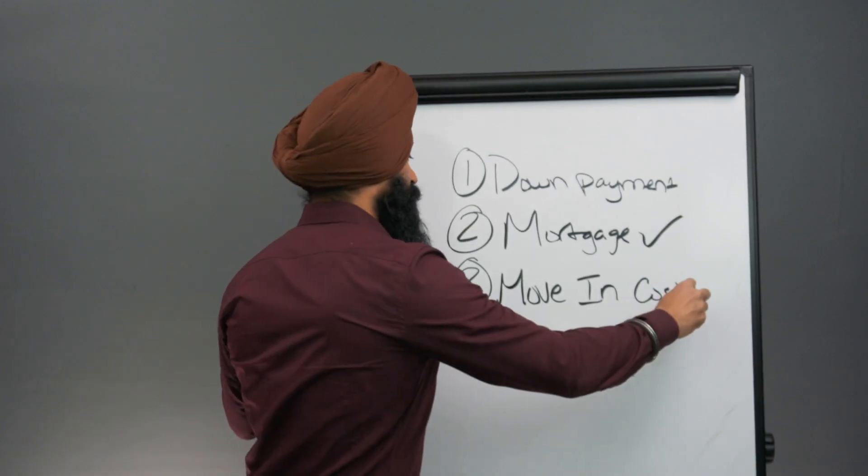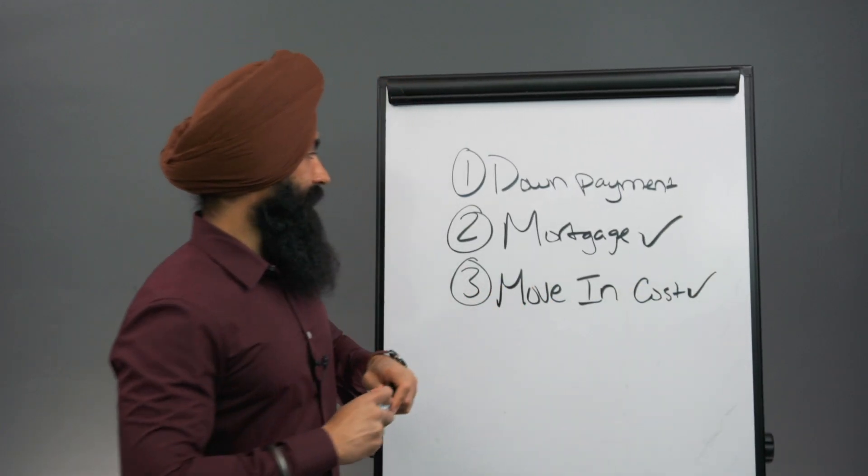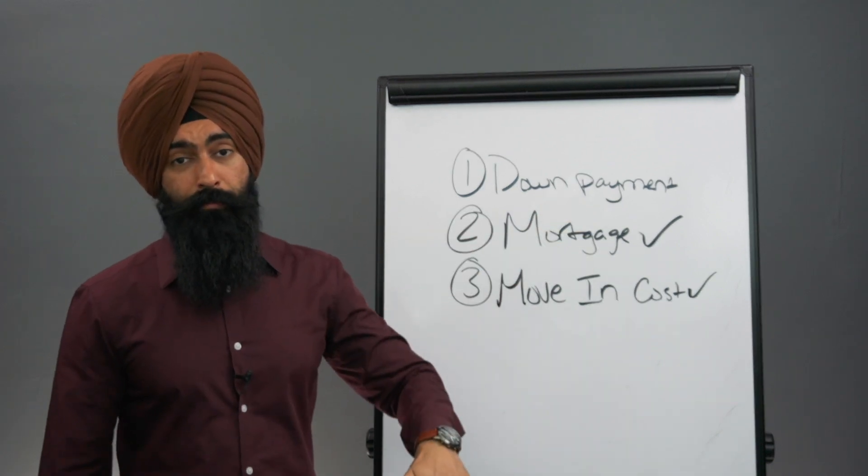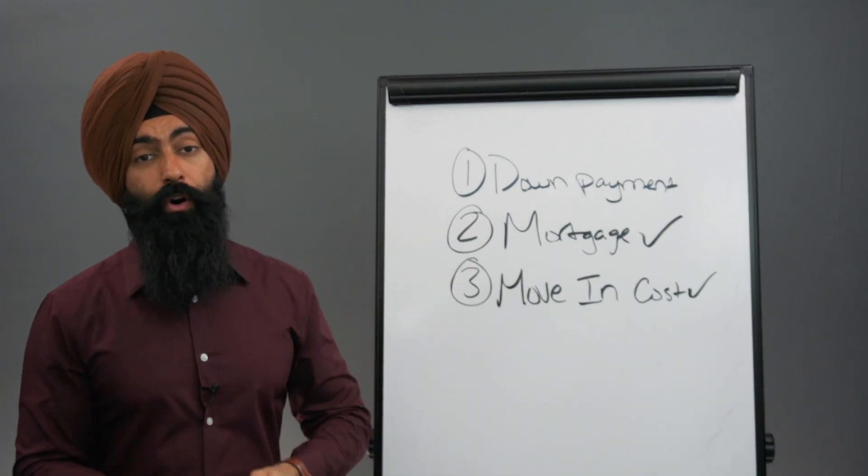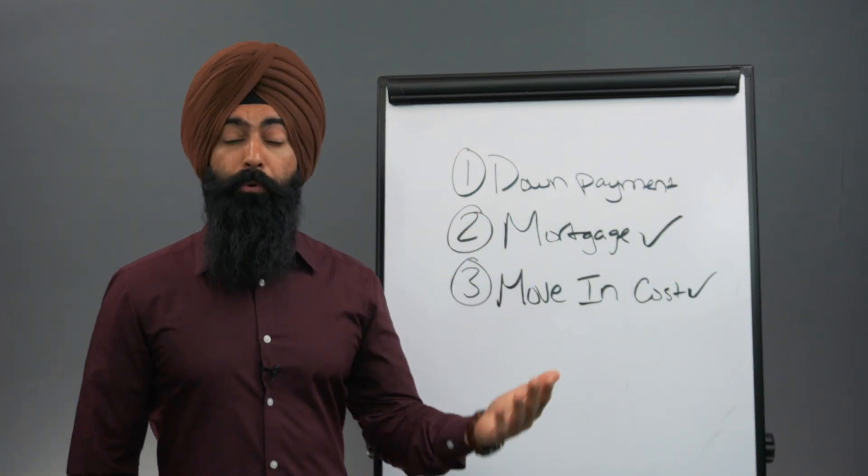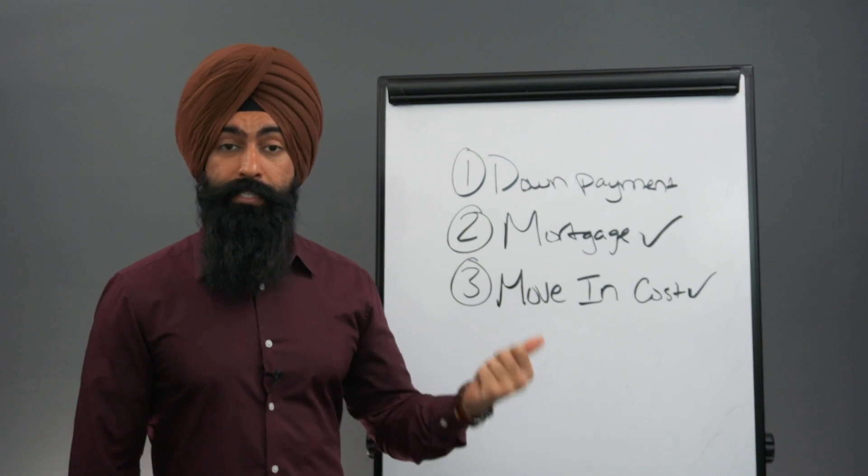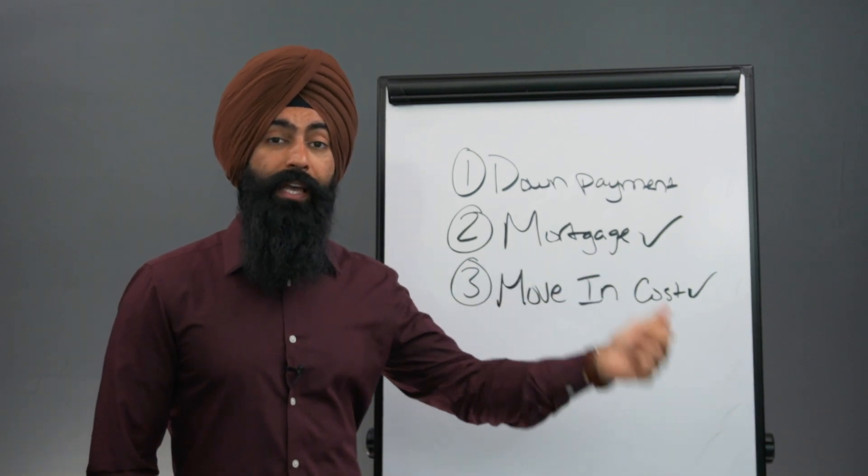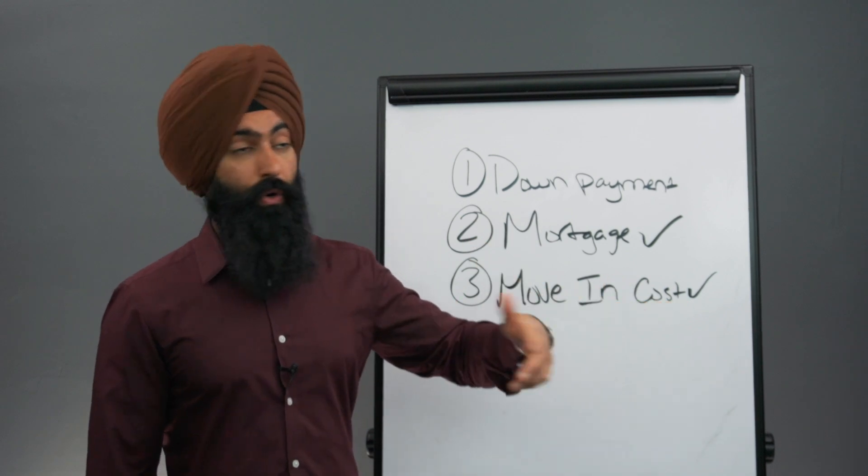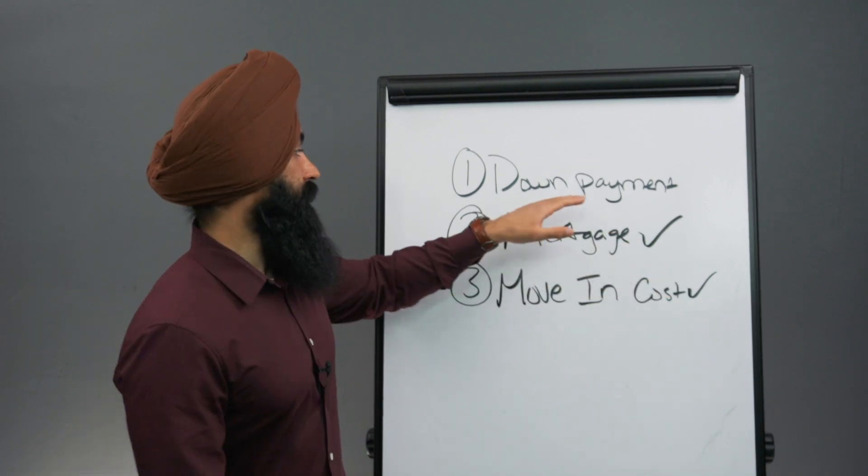Now, when it comes to your down payment, there's a couple of different ways that people like to look at this. Some people want to put down as much of a down payment as possible. That way, you have already equity in the home. That way, you have a head start in paying off the home. Other people want to put down as little as possible because they say, you know what? I don't want to put this much cash in right now. I'd rather invest this money somewhere else or do something else with the money instead of putting it into this down payment.